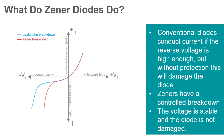As an example, a Zener diode with a breakdown voltage of 3.2 volts will have a voltage drop across the diode of very close to 3.2 volts over a wide range of reverse currents. This makes the Zener ideal for generating reference voltages for other circuits.